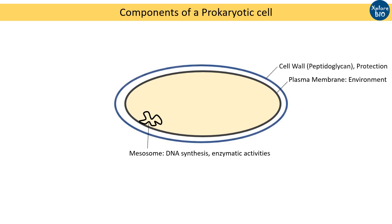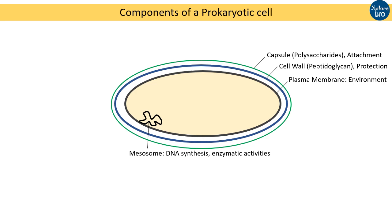Many prokaryotes contain a cell wall around the plasma membrane which is made up of peptidoglycan, for additional support, maintaining the shape and preventing dehydration. Archaea contains pseudopeptidoglycan, polysaccharides, glycoproteins or proteins in their cell wall. Many prokaryotes also contain a sticky polysaccharide around the cell wall, known as a capsule, which helps the prokaryote in attaching to other surfaces.